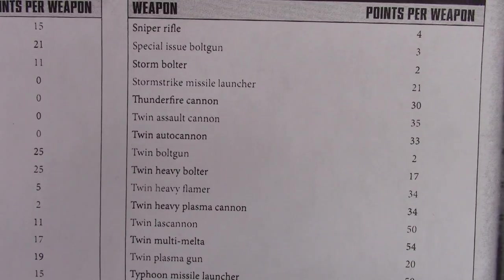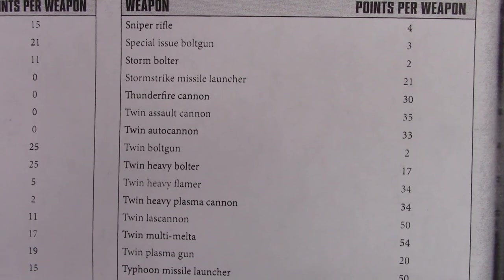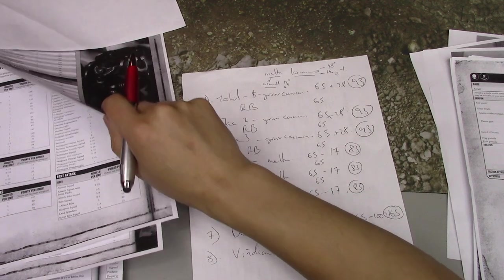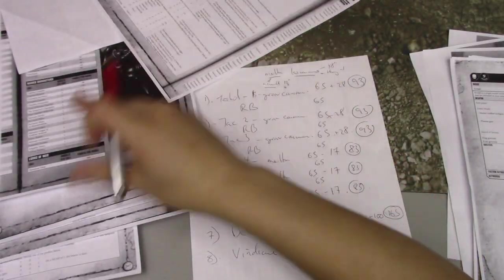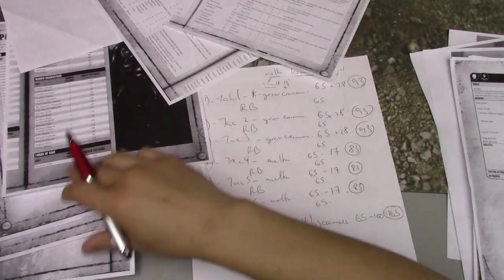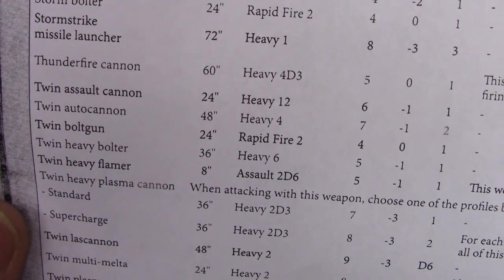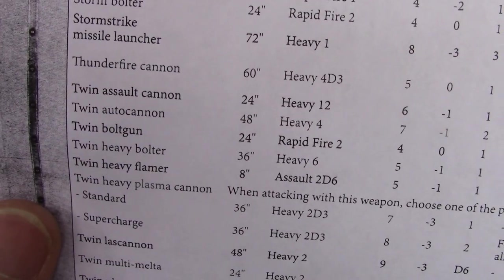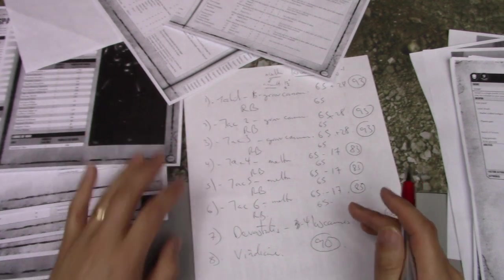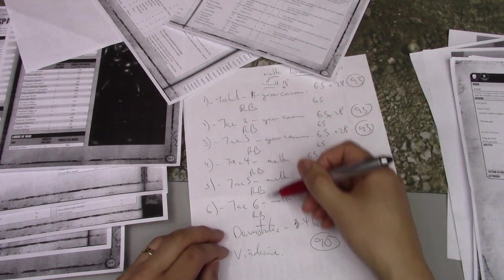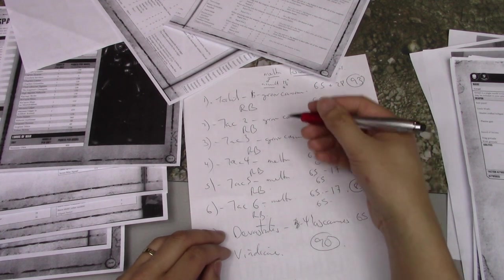Obviously if you're carting around 10 man squads, you're going to have to bring rhinos. So I'm going with razorbacks. They all get razorbacks except the devastators - they're just going to sit in the back. Razorbacks are 65 points each. Now what do I want on them? All the weapons are fairly similarly priced. I'm really looking at heavy bolter to keep it cheap at 17 points, or a twin lascannon at 50 points is just too much. I already got four lascannons and three meltas. I don't need the lascannons. I need chaff killing.